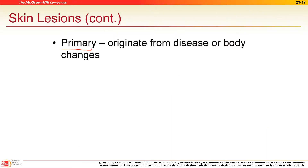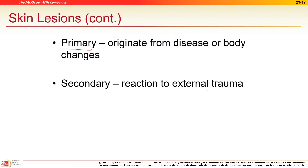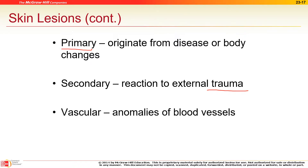Lesions can be primary — a direct cause, likely a skin disorder itself — secondary, from physical trauma, or tertiary, when a different disease causes skin problems. Vascular examples include a bruise and varicose veins. Varicose veins in the anus are called hemorrhoids — same phenomenon, just a different location.